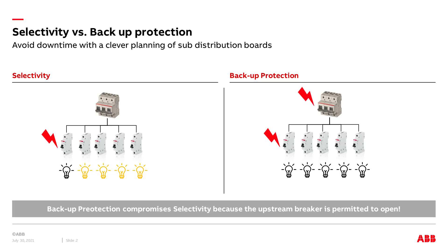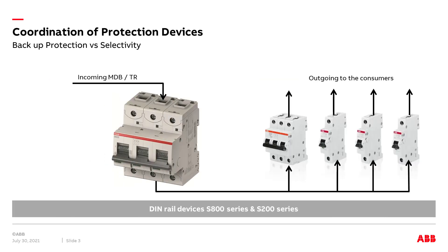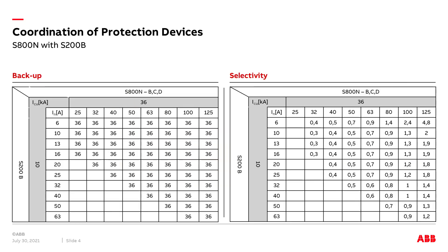Backup protection is very often used in industrial applications. In this first example, an S800 — a high-performance miniature circuit breaker — is used as an upstream breaker. The breaking capacity of this device is 36 kilo amperes. The branches are protected with S200 miniature circuit breakers rated at 6 kilo amperes. The easiest way to find the coordination values is to use the coordination tables in the main catalog.